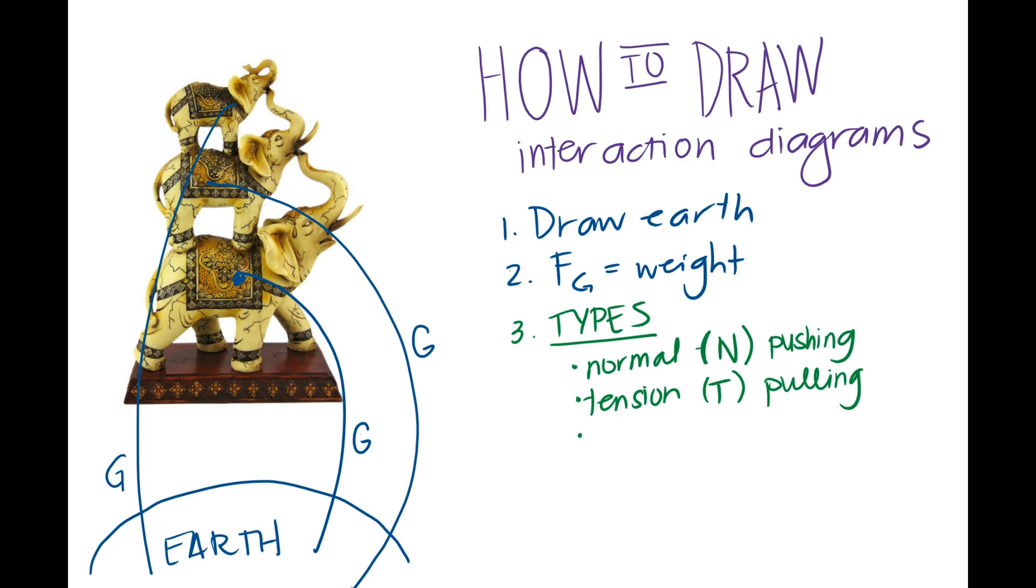Next one is friction, we mark that with an F and that's anything that is sliding. And then of course the last one which we've already marked is gravity, anything that interacts with earth. We'll call it planet, so earth is our planet.